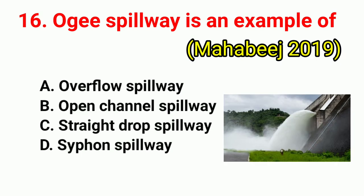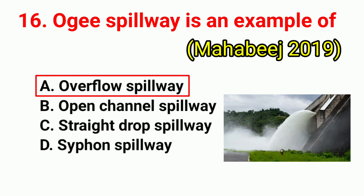Question No. 16. Ogee spillway is an example of? This question was asked in Mahabish 2019 exam. Correct answer is option A: overflow spillway.